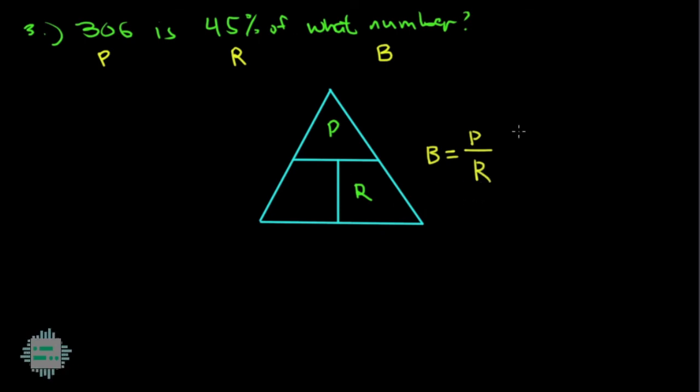We know the values, we just need to plug in. Our percentage is 306 divided by 45%. Again, we cannot solve this with a percent symbol. So I need to rewrite this into decimal by just moving two decimal places to the left. This means that 45% is actually 0.45.